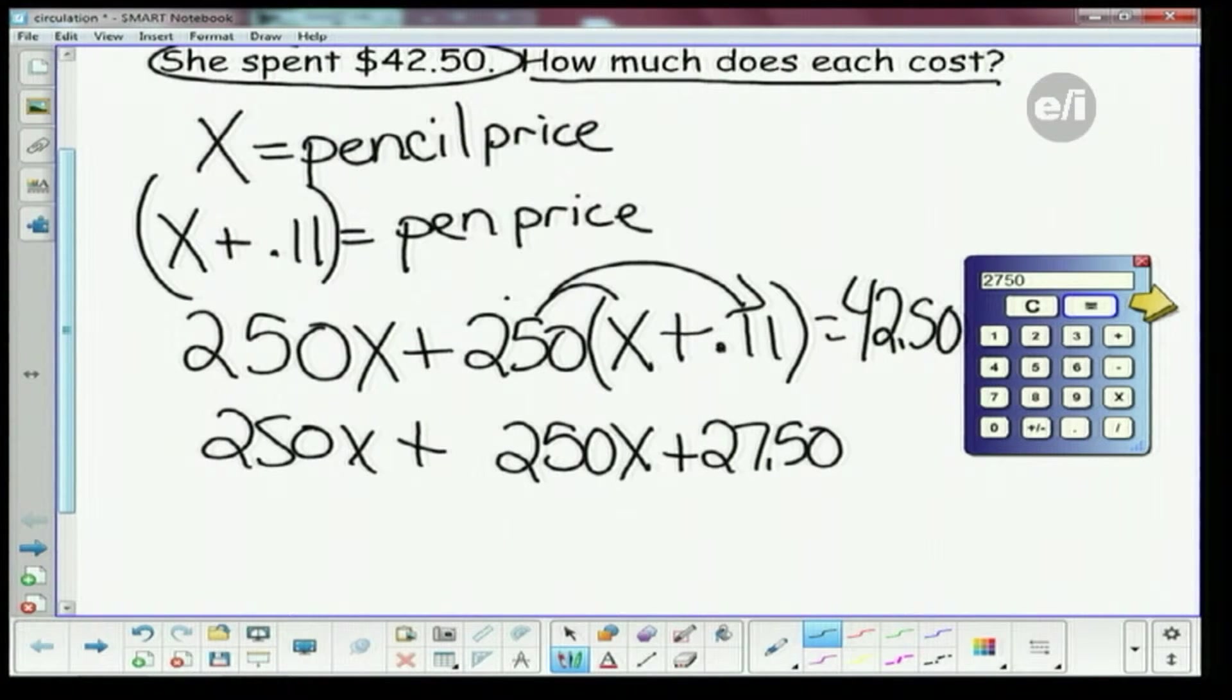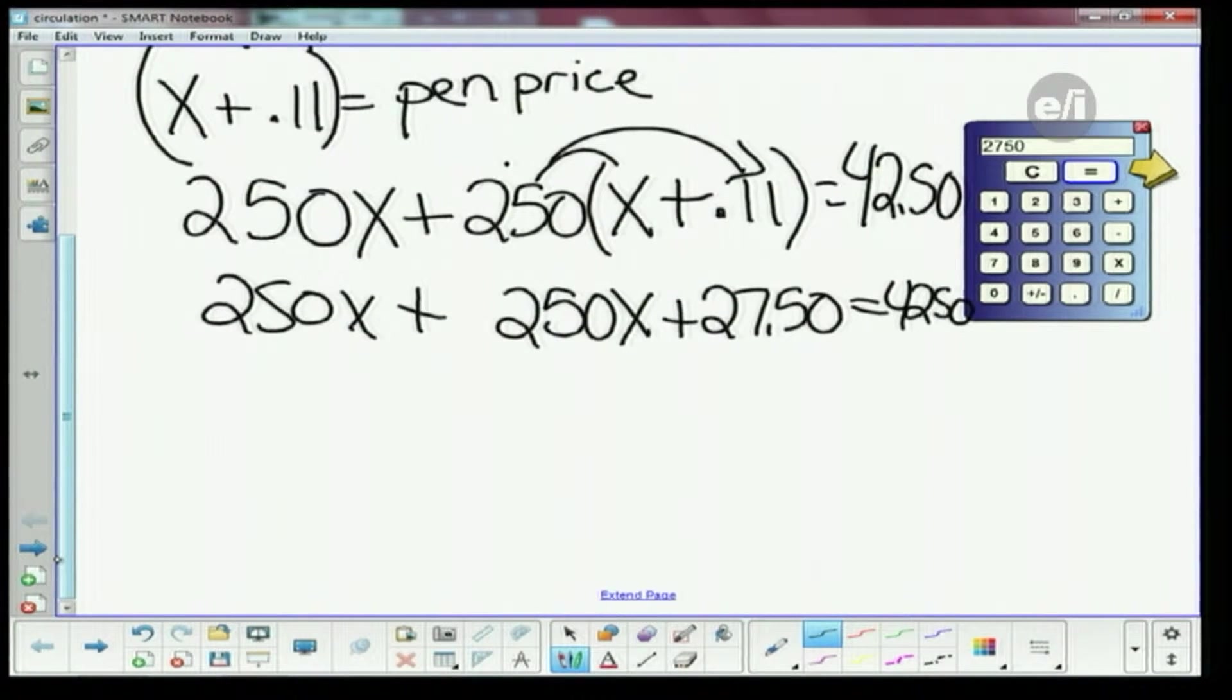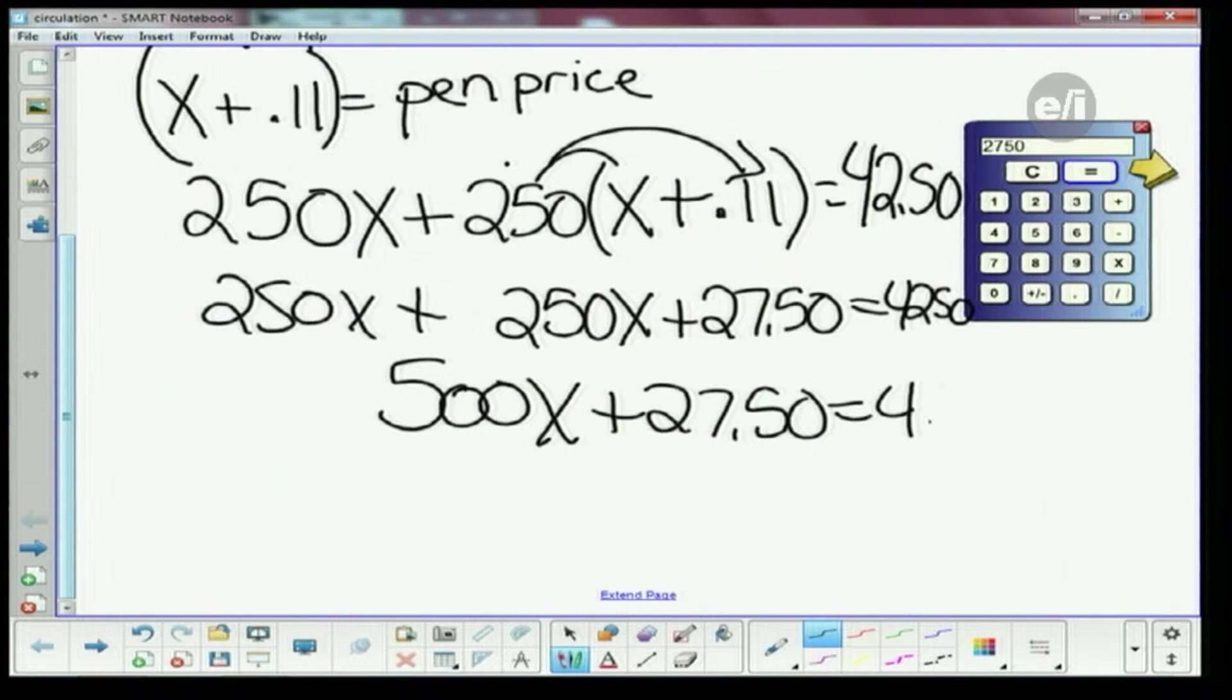So I'm gonna bring the other part of the equation down: 250X plus 250X equals $42.50. So now we're gonna combine some like terms. What's 250X plus 250X? You have 250 X's, you add 250 more, you now have 500. 500X is awesome.